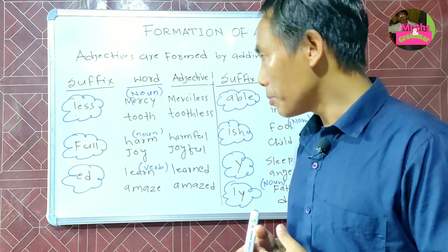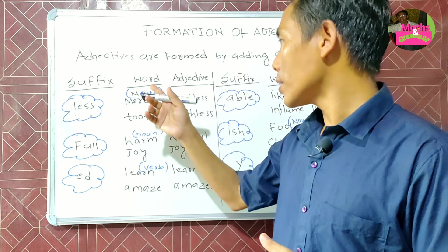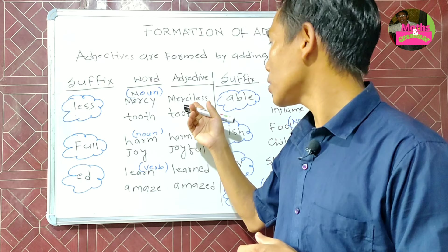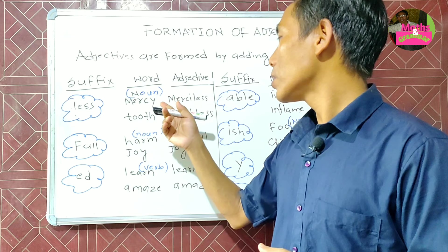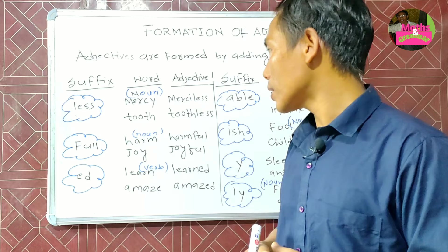Let's see here — '-less' is the suffix. The word here is 'mercy,' which is a noun. Mercy becomes 'merciless' with the help of this suffix, where the 'y' converts to 'i.' Similarly, 'tooth' is a noun and becomes 'toothless.'